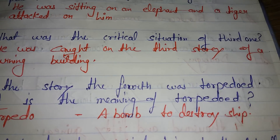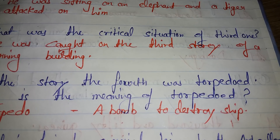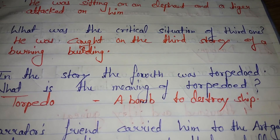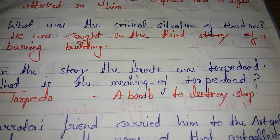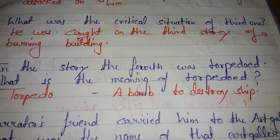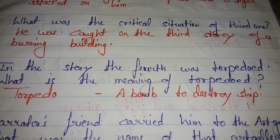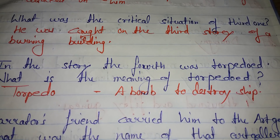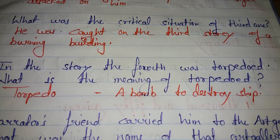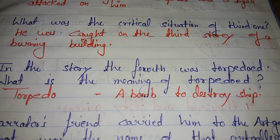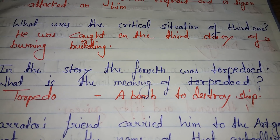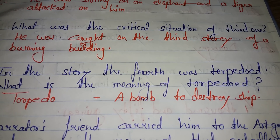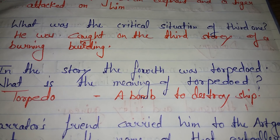What was the tight corner of the third person? He was caught on the third story of a burning building — that was his difficult situation.